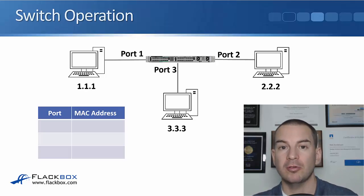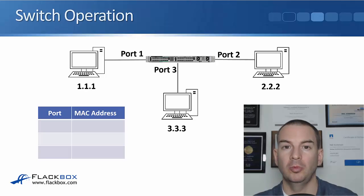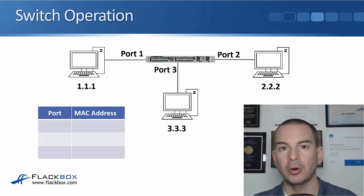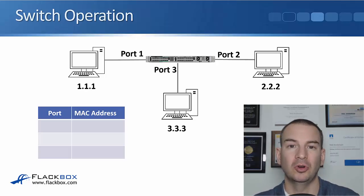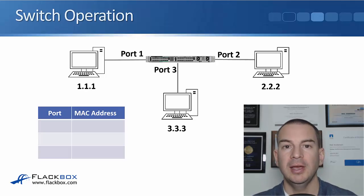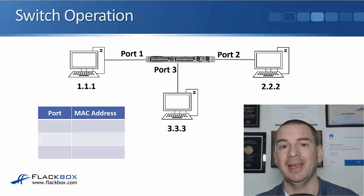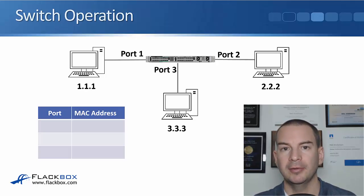So we've got one switch here. We've got a host with MAC address 1111.1111.1111 plugged into port 1 — written in shorthand as 1.1.1 to keep things simple. 2.2.2 is plugged into port 2 and 3.3.3 is plugged into port 3. Right now we've just powered everything on, so there's nothing in the MAC address table yet.